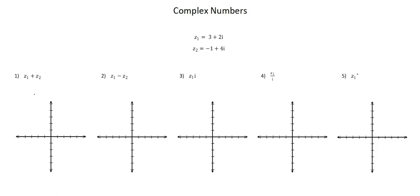Problem one: Z1 plus Z2. I can add the real and imaginary parts of Z1 and Z2 to get 2 plus 6i. For the geometrical analysis, I'm going to plot the imaginary numbers in the Argand diagram, starting with Z1, 3 plus 2i, and Z2, negative 1 plus 4i. I will create position vectors for both complex numbers. Looking at the result, 2 plus 6i — 2 and 6 — I'll create a position vector for this result.